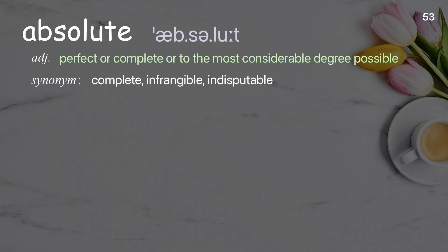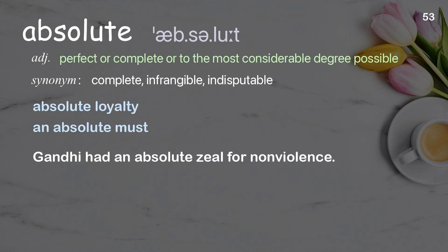Absolute: Perfect or complete, or to the most considerable degree possible. Examples: Absolute loyalty. An absolute must. Gandhi had an absolute zeal for nonviolence.